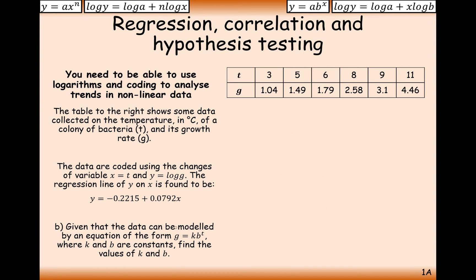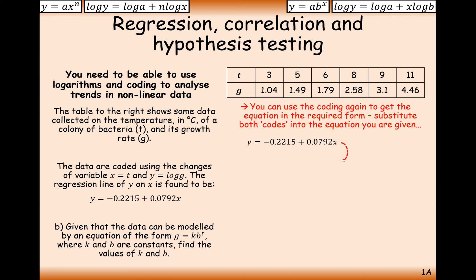Part B, given that the data can be modelled by an equation of the form g equals k times b to the power of t, where k and b are constants, find the values k and b. What we need to do is replace y with log g because that's what it's equal to, and x with t because that's what x is equal to.